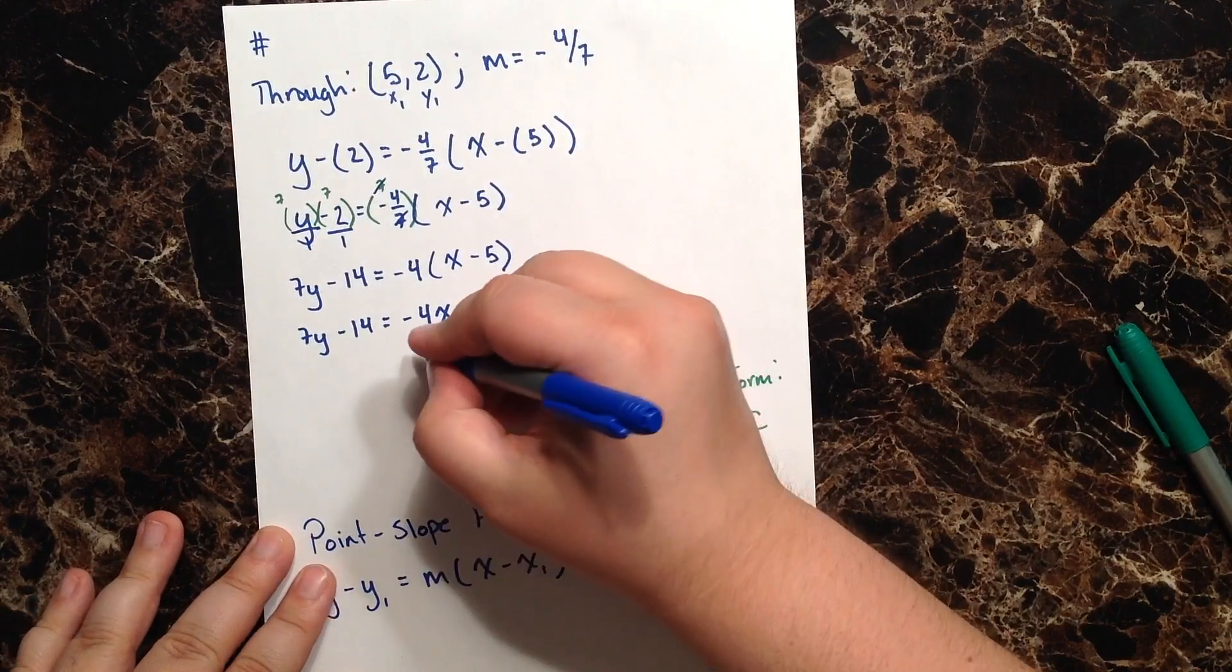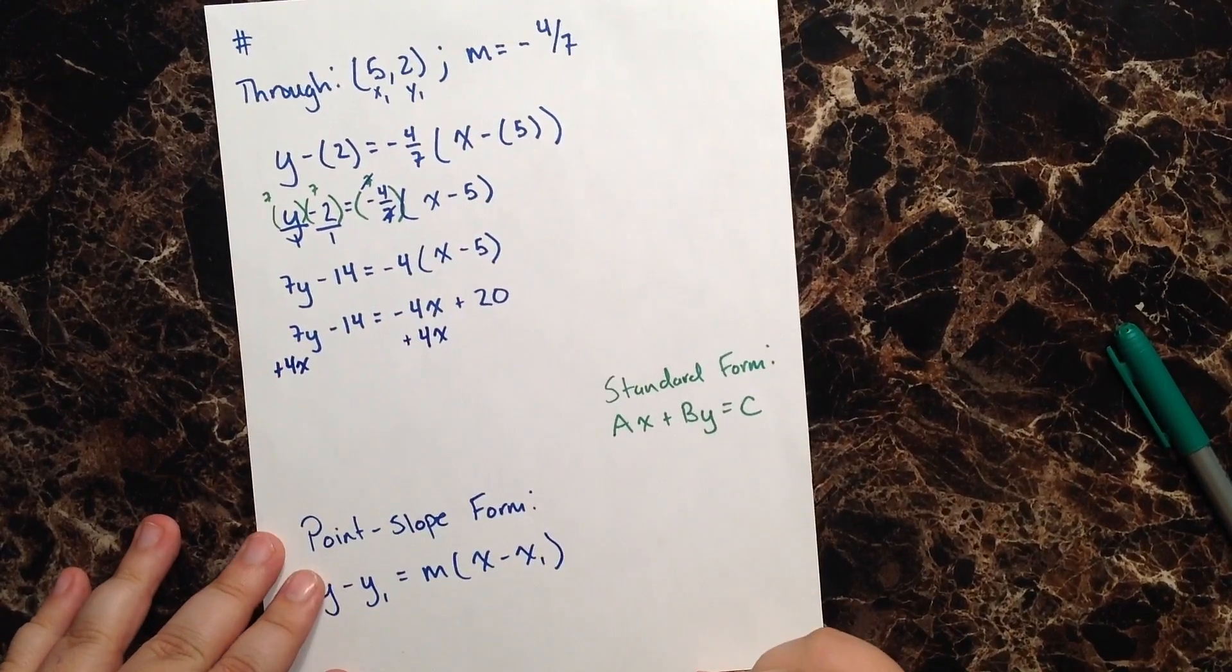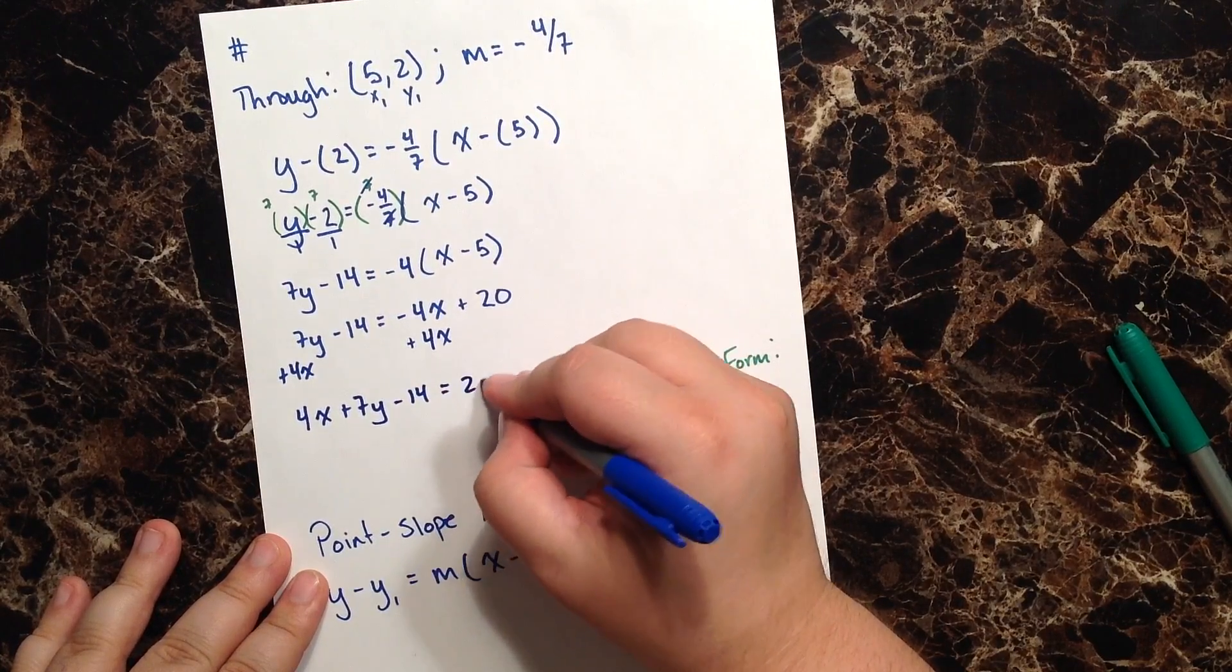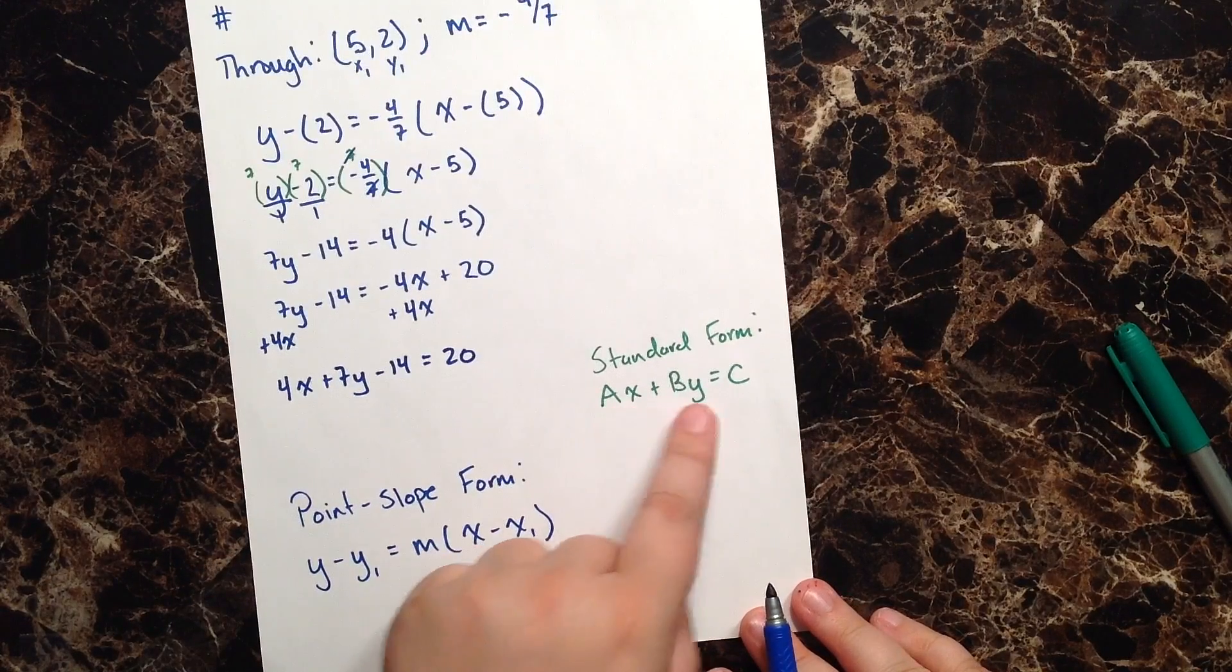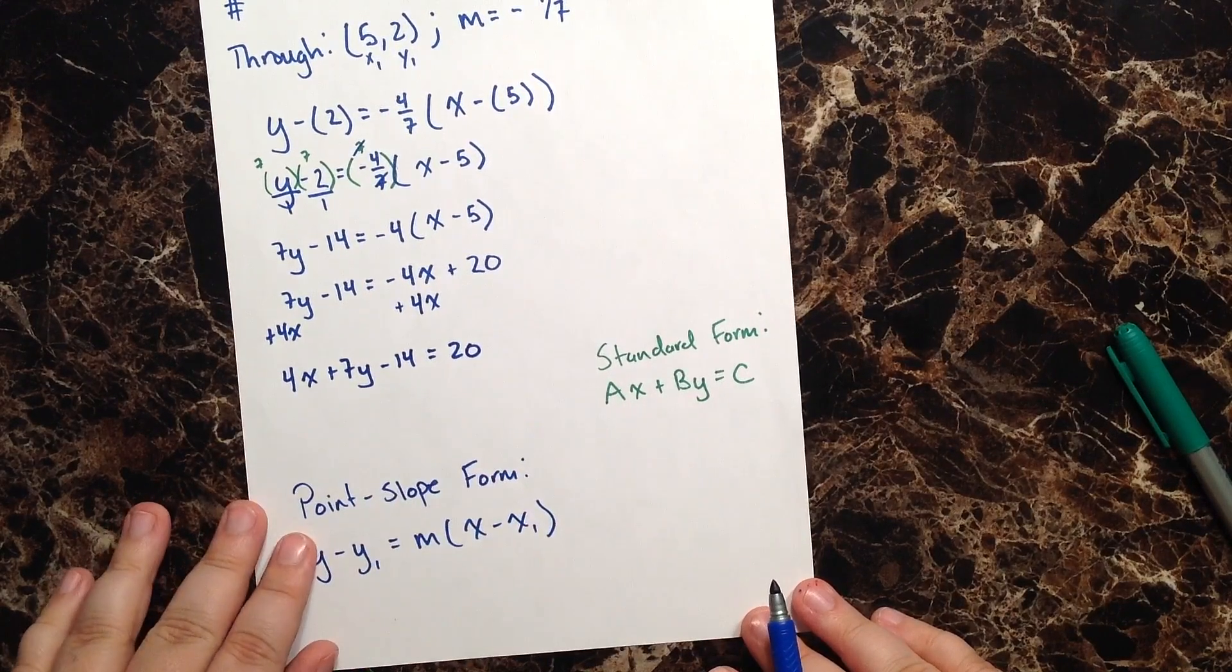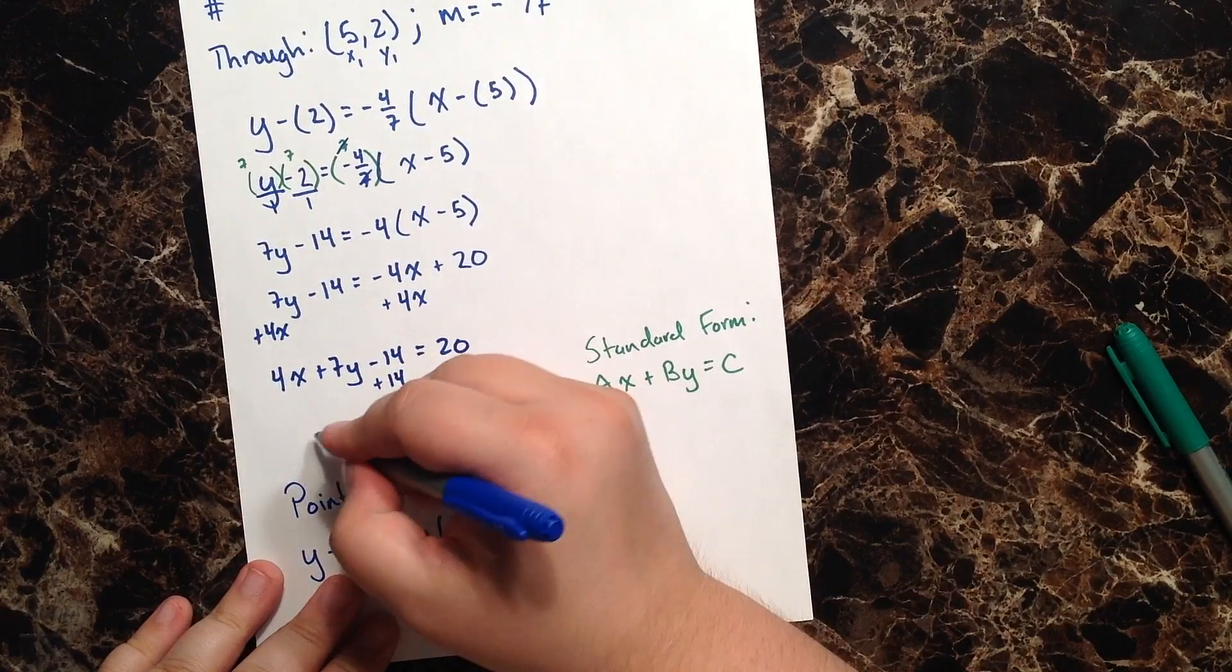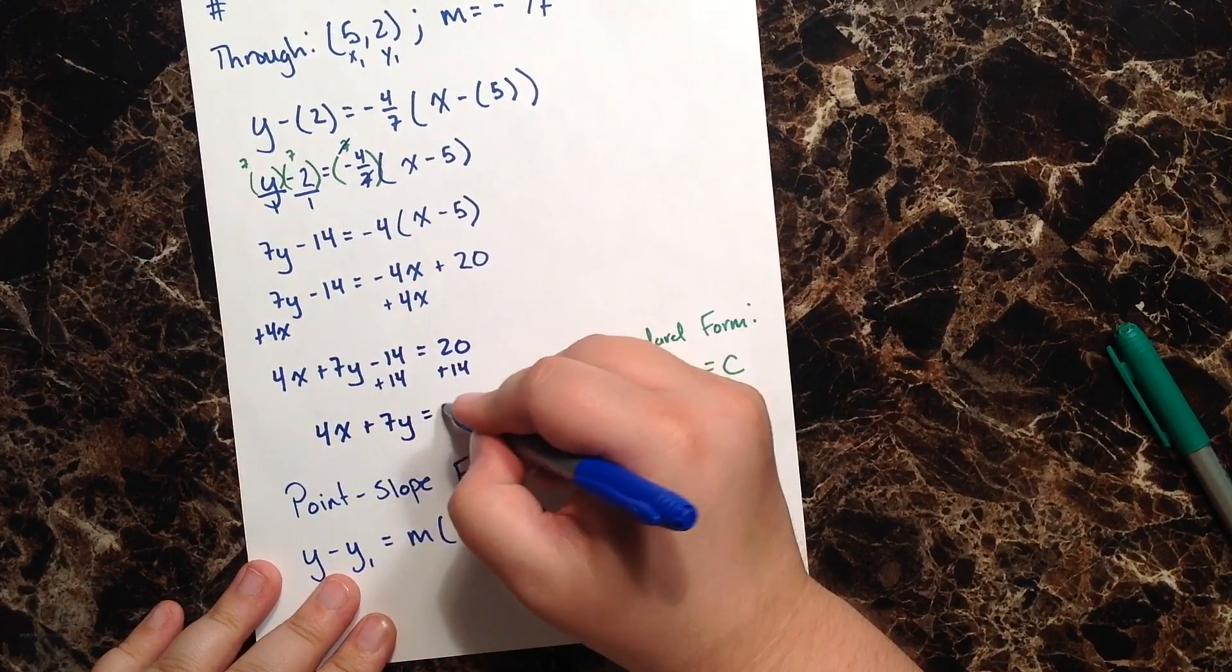Well, the first thing I can do is I can go ahead and bring my x term over. And when I do that, I'm left with 4x + 7y - 14 = 20. So I'm a little bit closer. Now I have my x and my y terms on the left, so that checks out. But I still have this problem with constants being on both sides of the equation. So the last step I'm going to do is go ahead and move this 14 from the left to the right. And when I do that, I get 4x + 7y = 34.